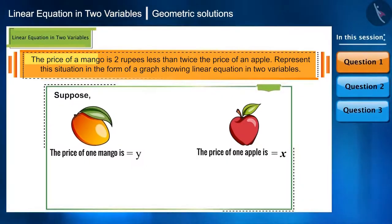The condition is that the price of one mango that is y is 2 less than twice the price of one apple. y is 2 less than 2x, that is y is equal to 2x minus 2. The equation is ready.